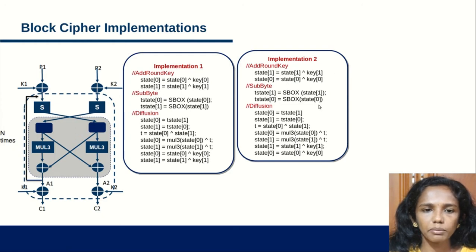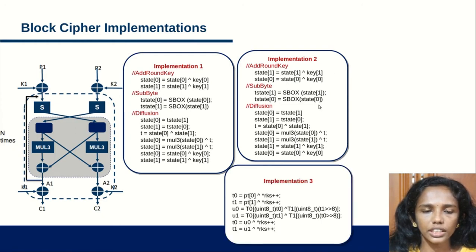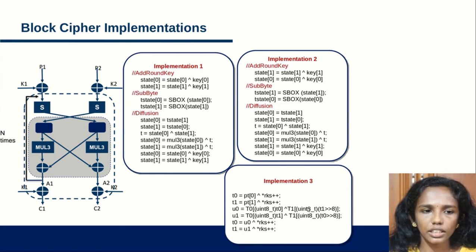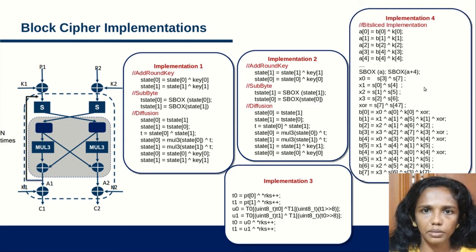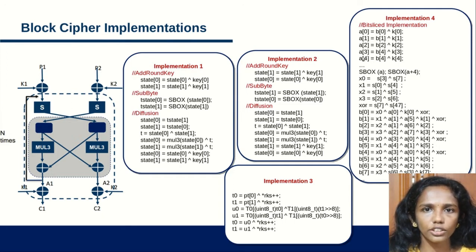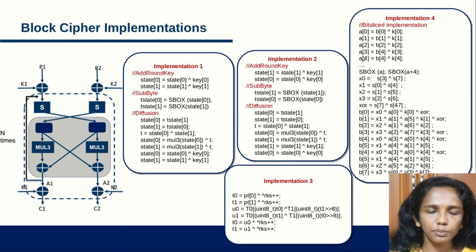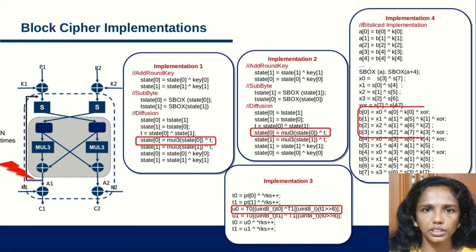For implementation 3, which is a T-table based implementation, the operations are merged — such as sub-byte, diffusions, etc. For implementation 4, which is a bit-sliced implementation, one byte operation in the algorithm is represented as bit operations in the implementation. The switchboards are different for different implementations of the same cipher.